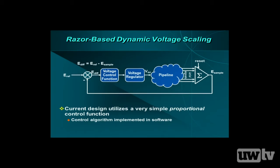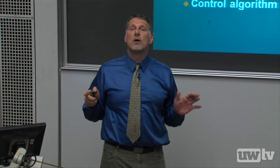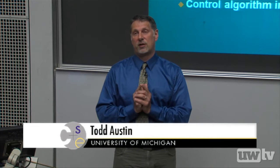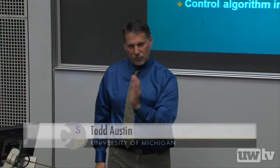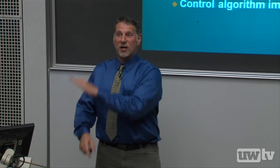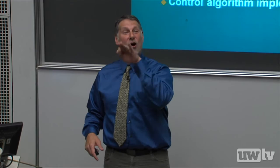We have a target error rate reference. With Razor, we don't want an error rate of zero because that could mean lots of margin — we want a very tiny error rate, typically about 0.1%. If the error rate is higher, we don't have enough energy and raise the voltage; if it goes to zero, we have too much energy and lower the voltage. So we just need a simple control system that keeps us right at about 0.1% error rate. I always tell people: with Razor, you want to shave voltage till it bleeds — the system should be failing all the time so you know you're on the edge.